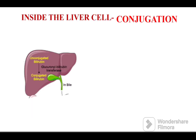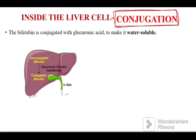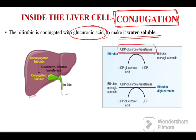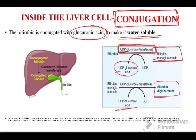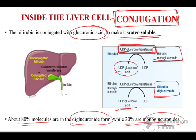Inside the liver, a process called conjugation occurs, which makes bilirubin water soluble. Conjugation occurs with the help of glucuronic acid and the enzyme UDP-glucuronyl transferase. This enzyme transfers glucuronic acid from UDP to bilirubin to form bilirubin monoglucuronide. If bilirubin monoglucuronide undergoes conjugation again, it forms bilirubin diglucuronide. About 80 percent of molecules are present in diglucuronide form, whereas 20 percent are in monoglucuronide form.